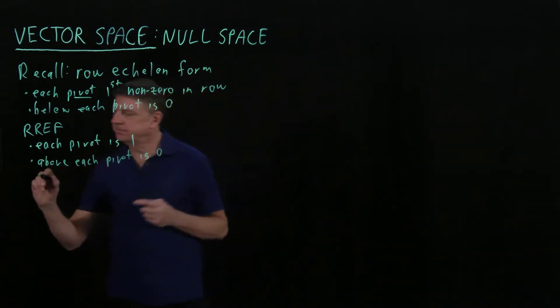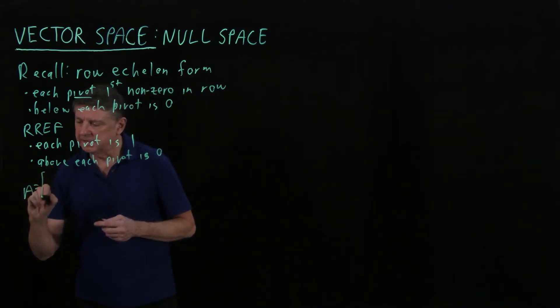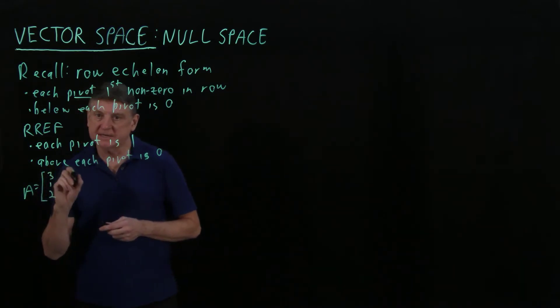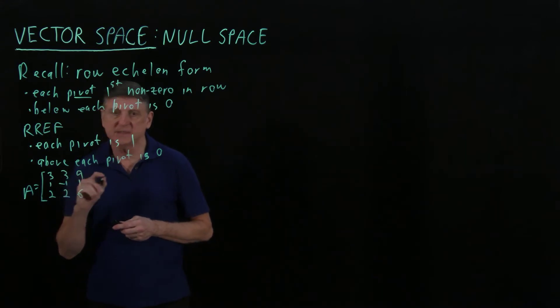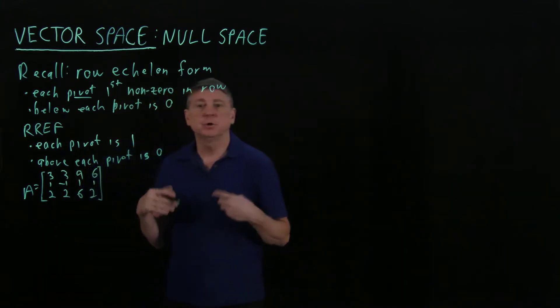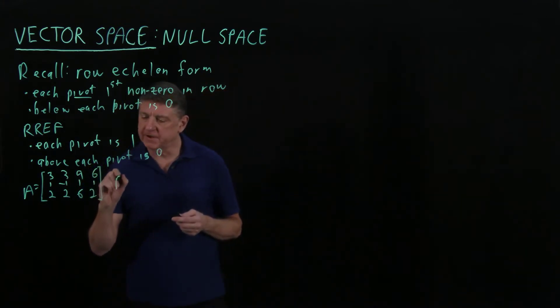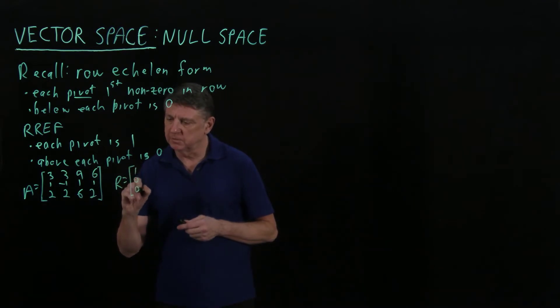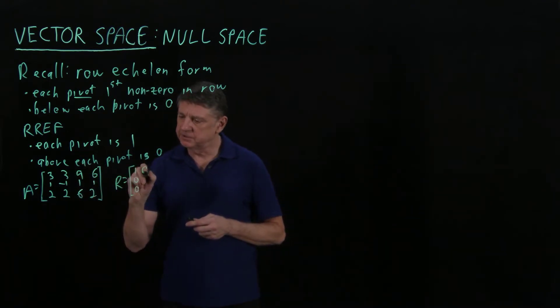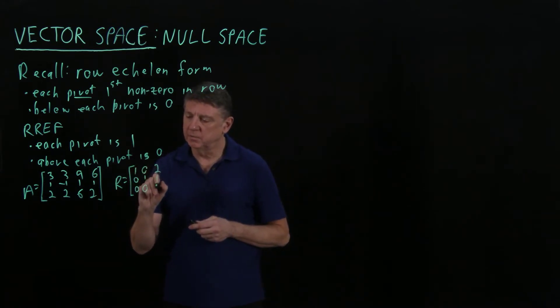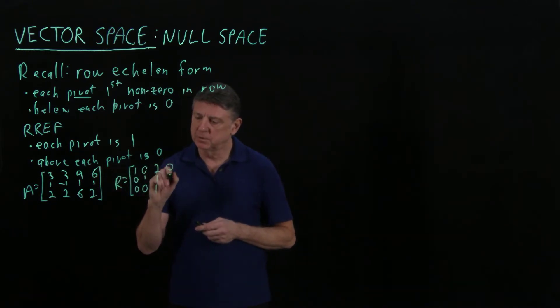Let's take a simple example. If we have a matrix A, its first column is (3, 1, 2), its second column is (3, -1, 2), its third column is (9, 1, 6), and its fourth column is (6, 1, 2). After I perform the RREF, what I find is a matrix R. The first column is (1, 0, 0), the second column is (0, 1, 0), the third column is (2, 1, 1), and the fourth column is (0, 0, 1).